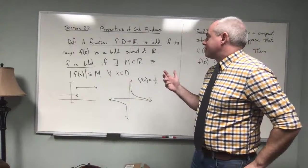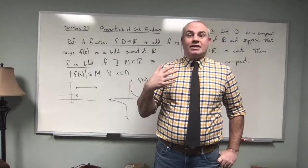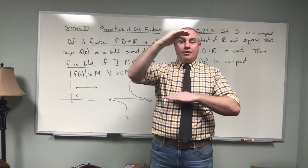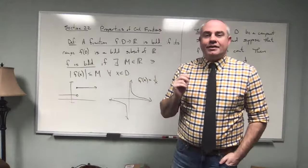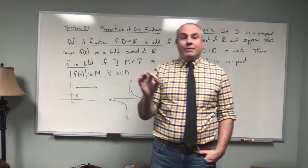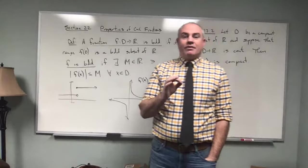Basically two ways of thinking about this: if the range is bounded, then we say that the function is bounded. Also, if there's a capital M up here and a negative M down here, where every value of the function falls in between those two values, then we say the function is bounded. This isn't really a new concept — we've talked about sets being bounded — but we've never really talked about a function being bounded.